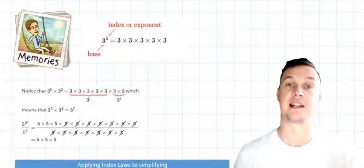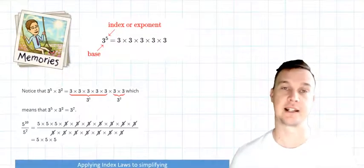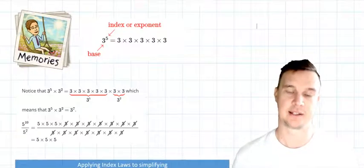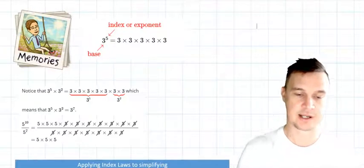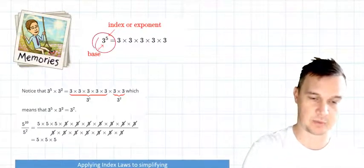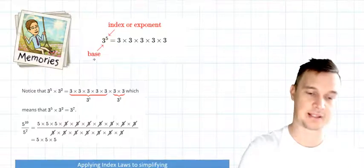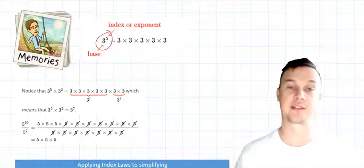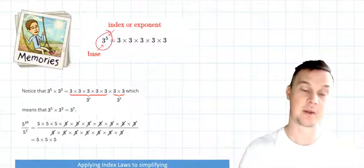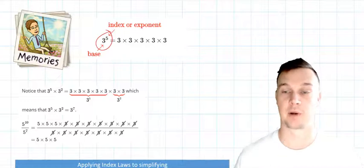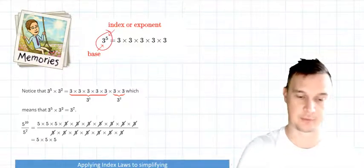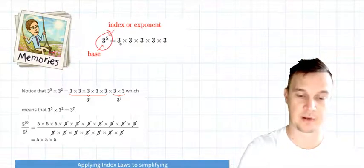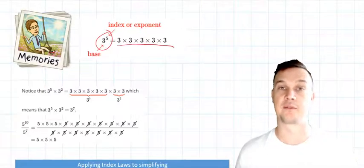So firstly, just a recap of what we've covered previously, and that is understanding our powers and our indices. So when you're looking at a number like this, what we have is a base number and then we also have an index number. And that effectively means 3 to the power of 5 is that we are multiplying the base number by how many indexes there are. For example, 3 to the power of 5 means that we times 3 five times.